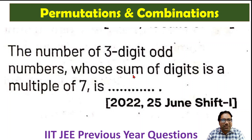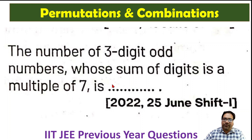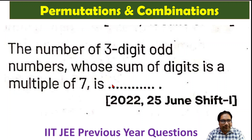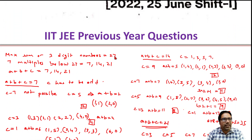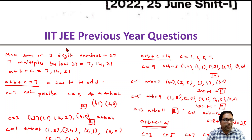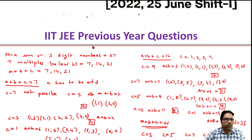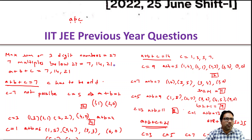We want to find the number of three-digit odd numbers whose sum of digits is a multiple of 7. If all three digits are 9s, the sum of digits would be 27, so the maximum sum of any three-digit number's digits is 27. We are looking for three-digit numbers whose digit sum is 7, 14, or 21, because 28 is greater than 27. If the three-digit number is a, b, c, then a plus b plus c should be 7, 14, or 21.